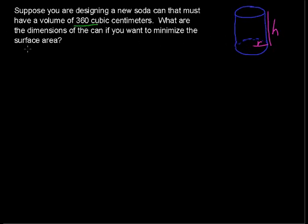We know the volume. The volume is the area of a base times the height. So that is pi r squared times h, and in our case, that equals 360 cubic centimeters.